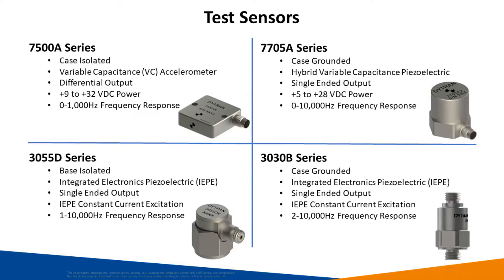The 7705 series is a case grounded hybrid variable capacitance piezoelectric accelerometer with a single-ended output. It requires a 5 volt to 28 volt DC excitation and has a frequency response of 0 to 10 kHz. The 3030 series is a case grounded integrated electronic piezoelectric accelerometer. It has a single-ended output and requires an IEPE constant current excitation. It has a frequency response of 2 Hz to 10 kHz.